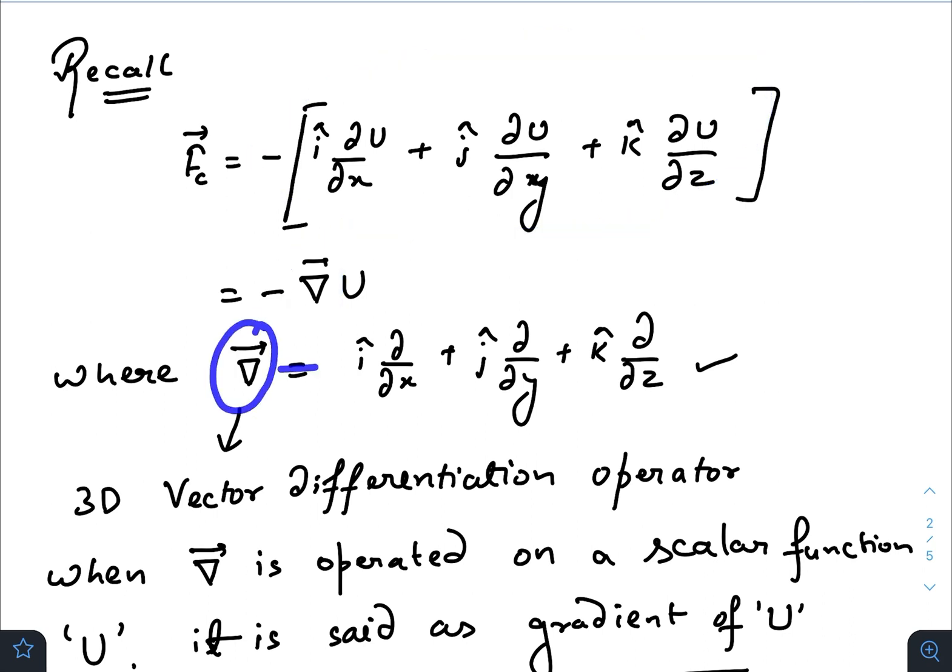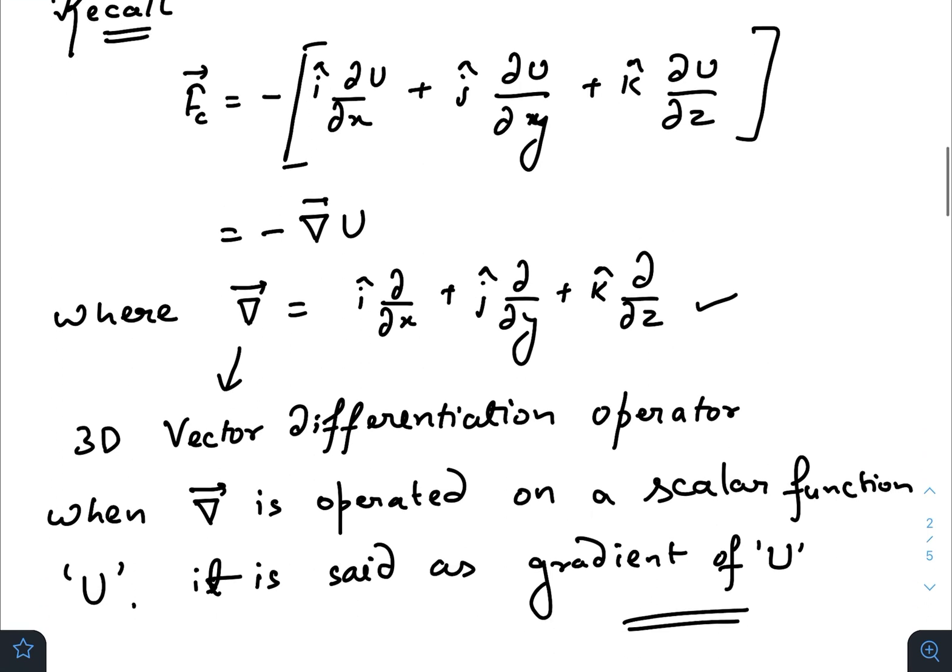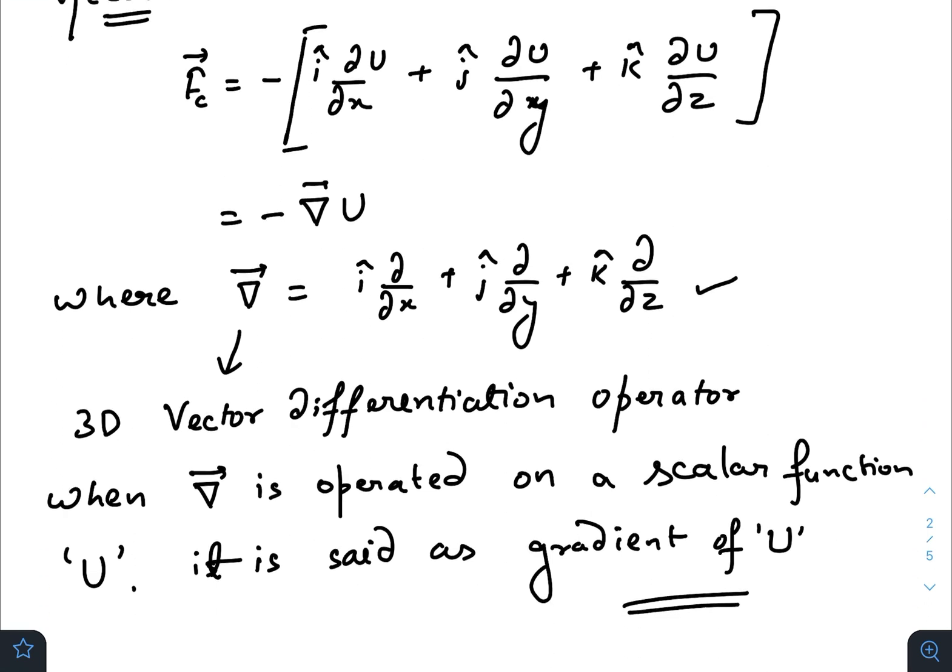This notation is i cap del del x plus j cap del del y plus k cap del del z. In first year engineering you will learn that this is known as the 3D vector differentiation operator, and when this operator operates on a scalar function u.